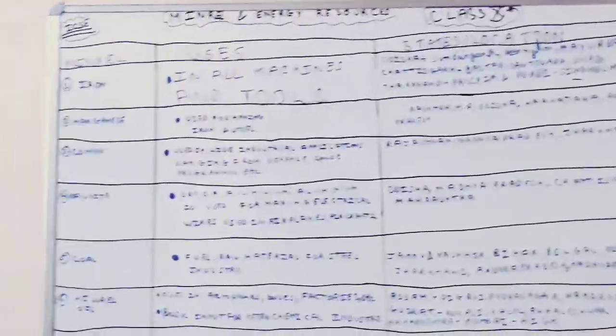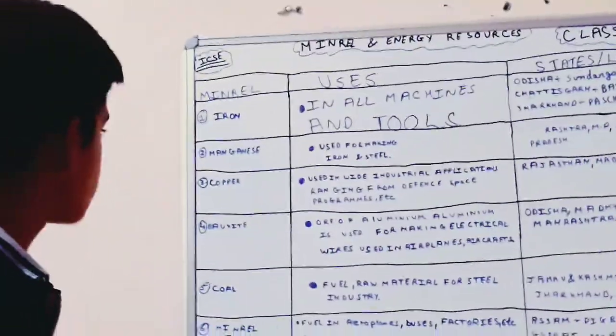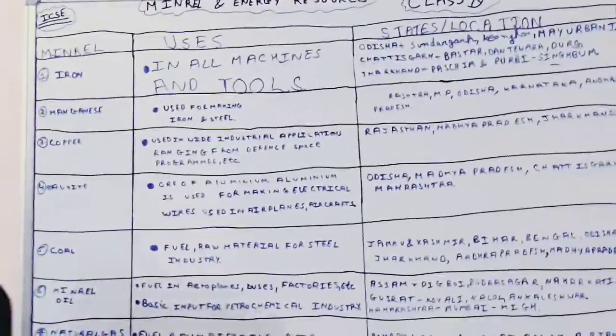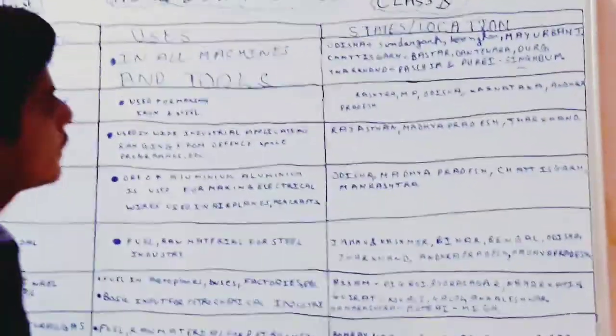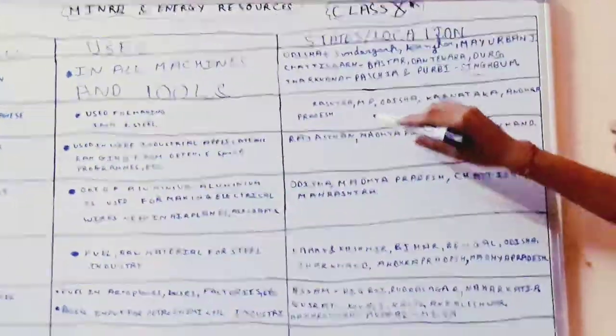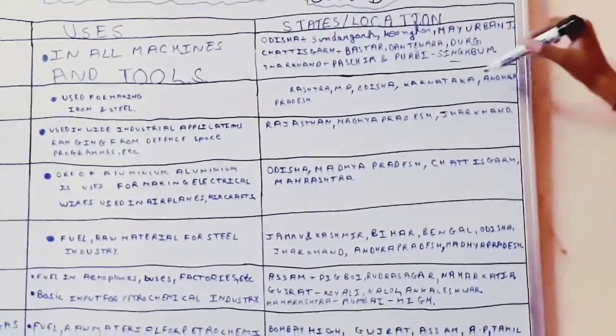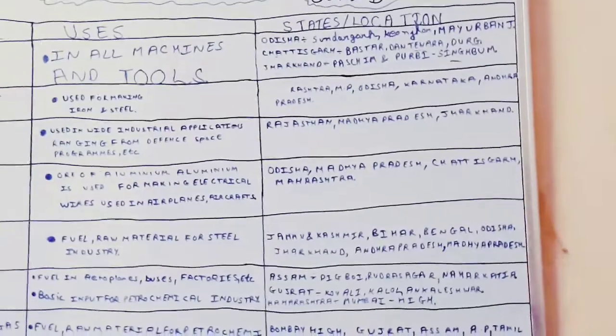Now manganese. Manganese is used for making iron and steel. Manganese is found in Maharashtra, Madhya Pradesh, Odisha, Karnataka, Andhra Pradesh in these states.